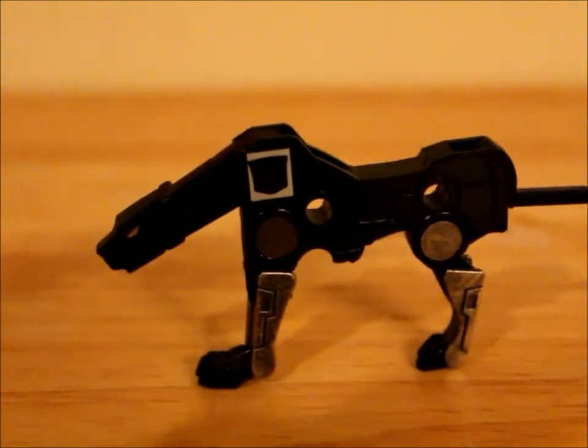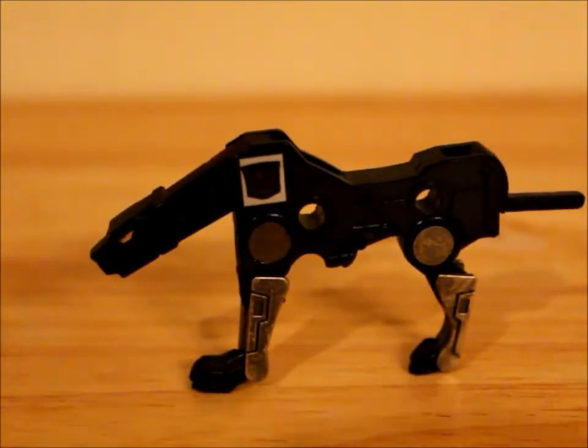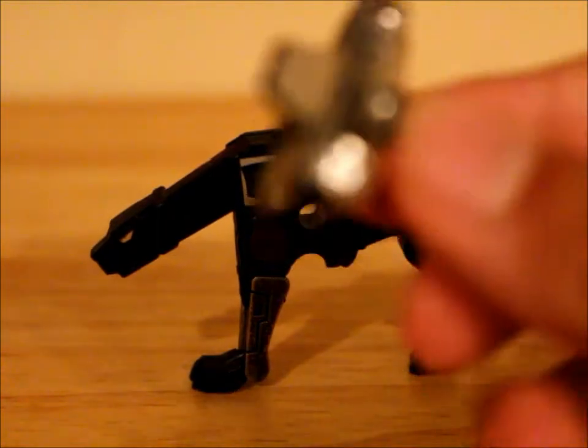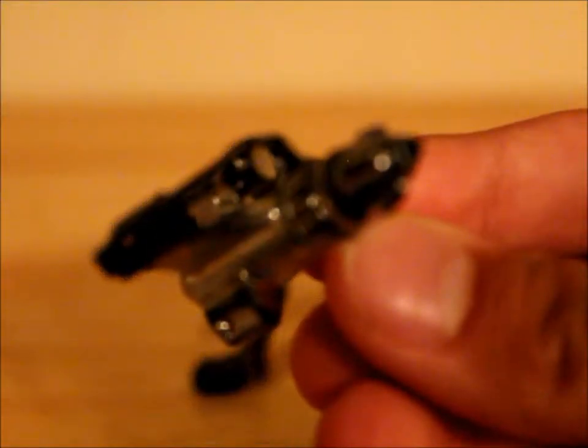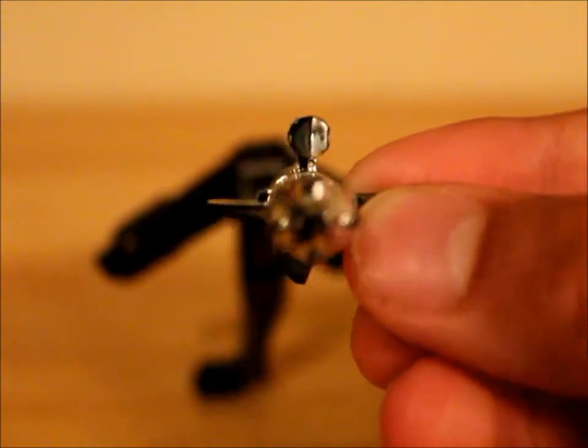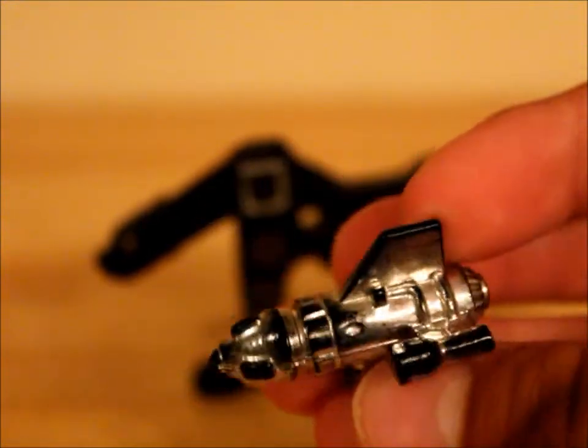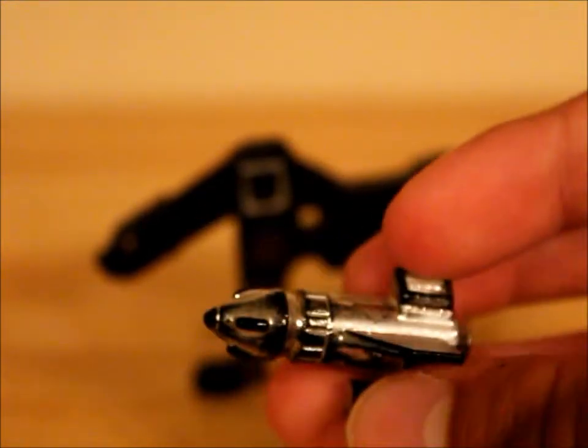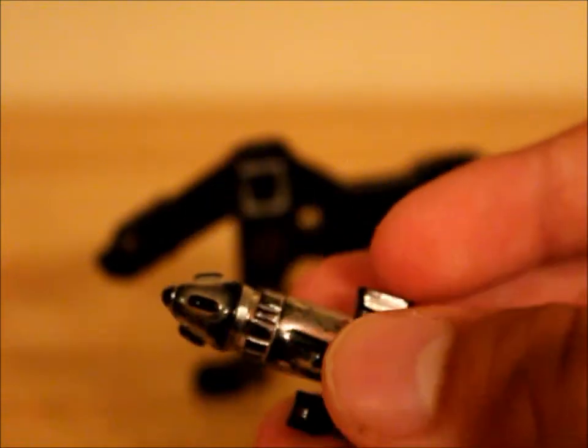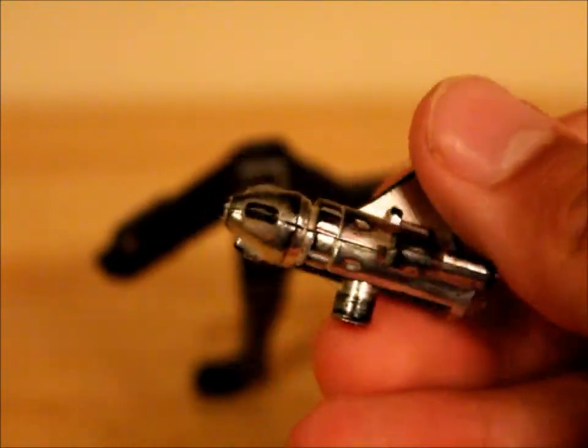He is my favorite Decepticon cassette. And here you have his little missile pods. Chrome's really worn off, especially right there and up there and whatnot. But it's all right. It just means he was loved by some kid.